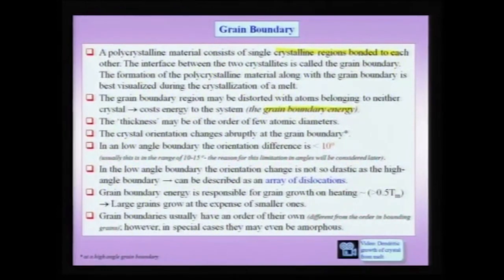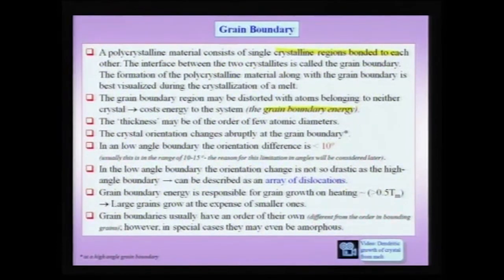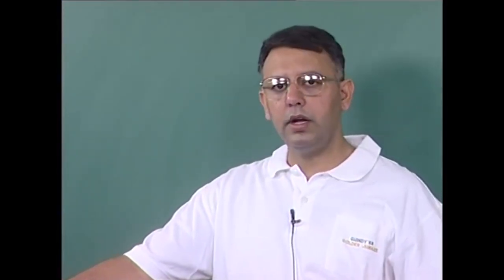The thickness of a grain boundary can be of the order of a few atomic diameters. In an ideal mathematical sense, a grain boundary is considered a two-dimensional defect, but in general it can extend a few atomic diameters on either side of the boundary. At the grain boundary, the orientation changes abruptly — on one side there is a crystal oriented in one way and on the other side in a different way. For a very special class of grain boundaries, the low angle grain boundaries, the misorientation may not be as abrupt. We will soon see that low angle grain boundaries have a further structure that can be understood in terms of an array of dislocations.